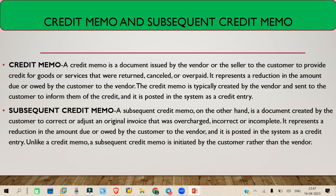One more difference: a credit memo is provided by the vendor to the company, whereas a subsequent credit memo is created by the business or company and can be provided from the company to the vendor. So this is basically the difference between credit memo and subsequent credit memo. I hope this concept is clear. That's it for today — we'll meet again tomorrow with more topics. Bye bye and take care.